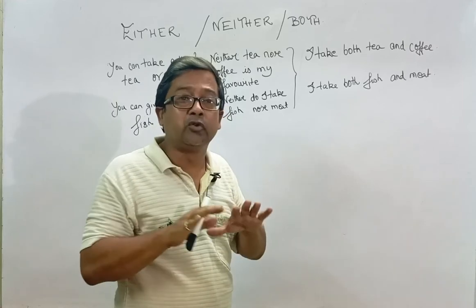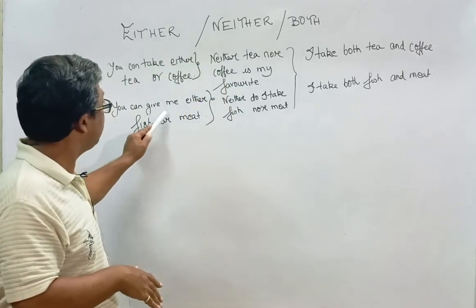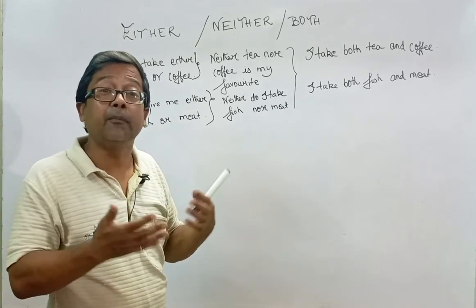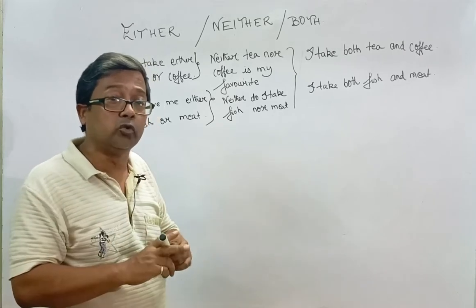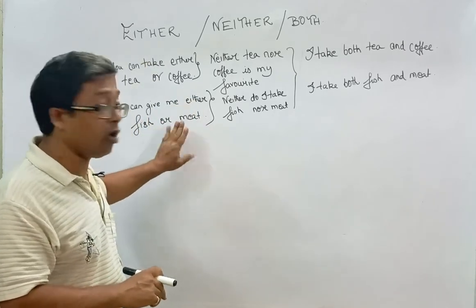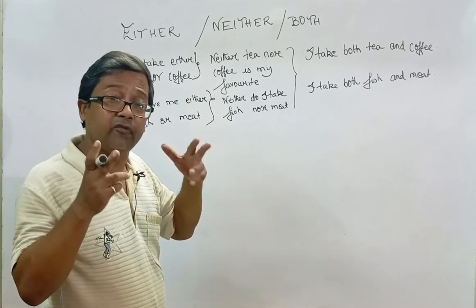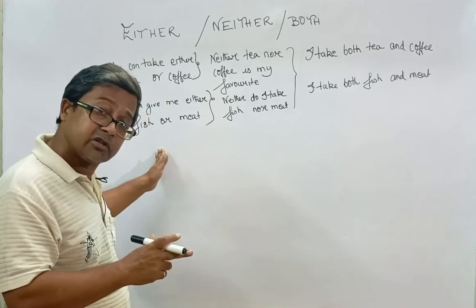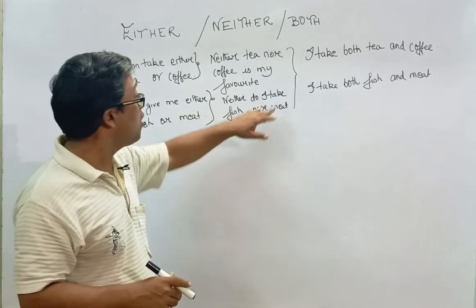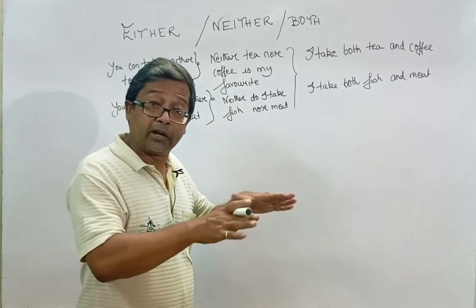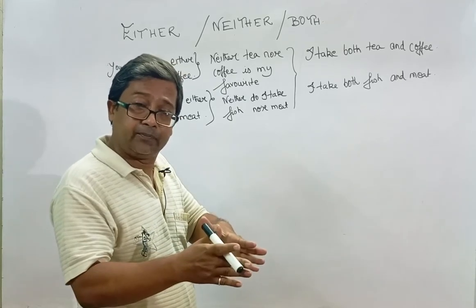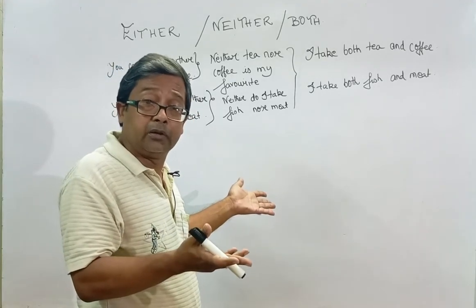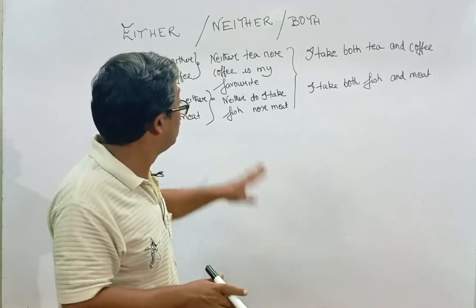Let's take another example to make it more clear. You can give me either fish or meat for my lunch — you are giving someone an option to give you one out of two, either fish or meat. Neither do I take fish nor meat — there are two things in front of you, fish and meat, and you say you don't like or take either, because you are a vegetarian.